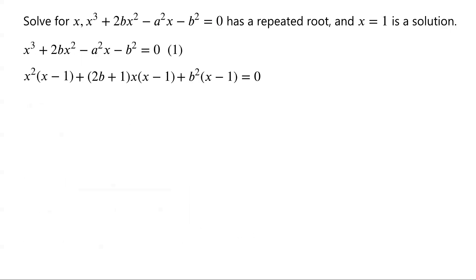Now the three terms on the left-hand side have a common factor X minus 1, so they can be factored as (X minus 1) times (X squared plus (2B plus 1) times X plus B squared).